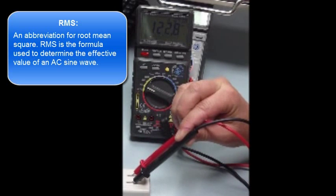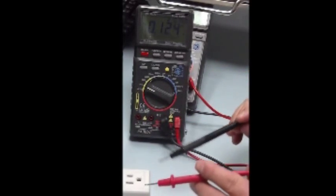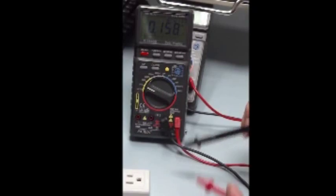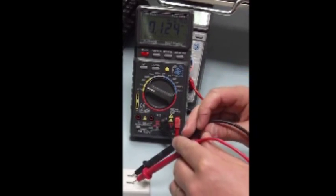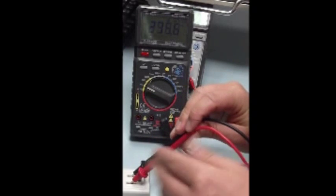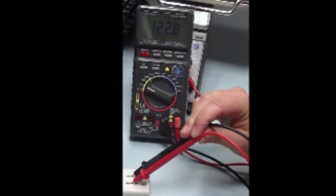I read 122.8 volts AC. This is an RMS reading, not its peak. If I switch the plus and minus—and there is no plus and minus with AC—but if we switch the red and black leads from neutral to hot and hot to neutral, it's still the same AC reading because there's no polarity associated with that.